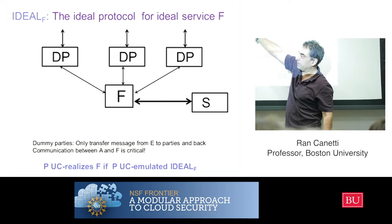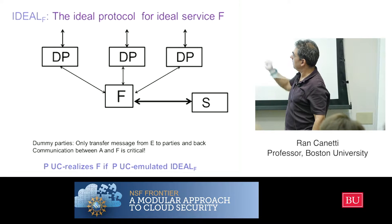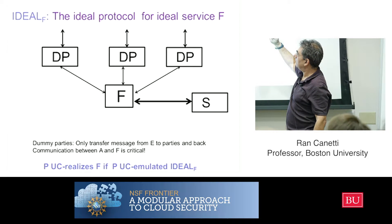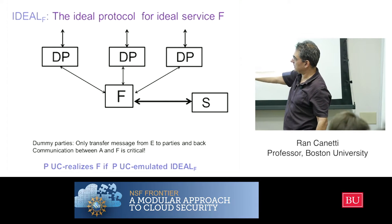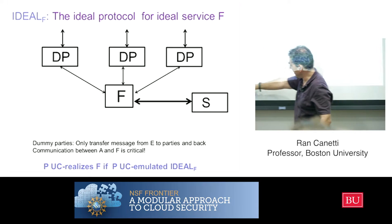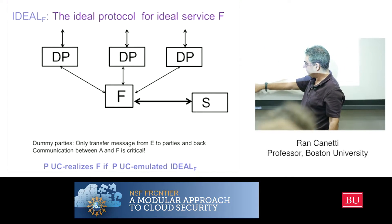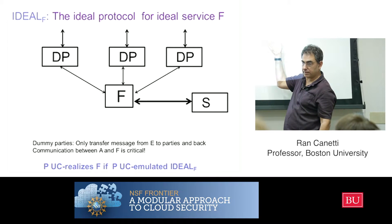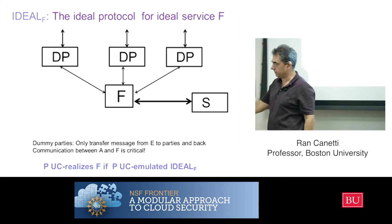We want all of this to go directly through that channel. And then we state the natural definition: a protocol pi-over-rho realizes some ideal service if it emulates this ideal protocol for the service, as written here. Again, nothing deep — just to have a precise language.